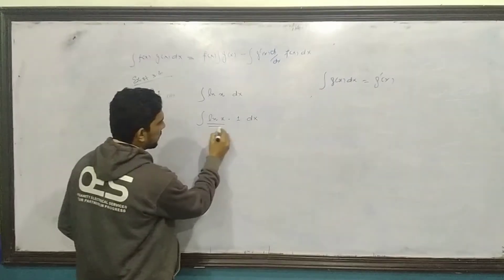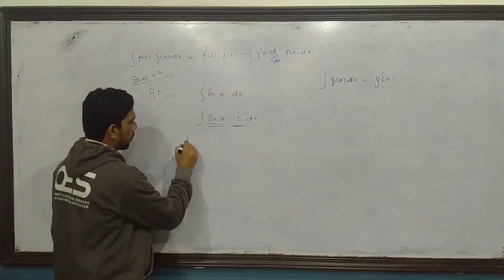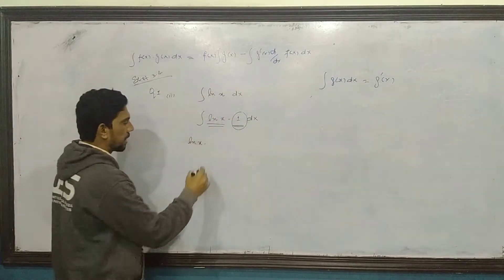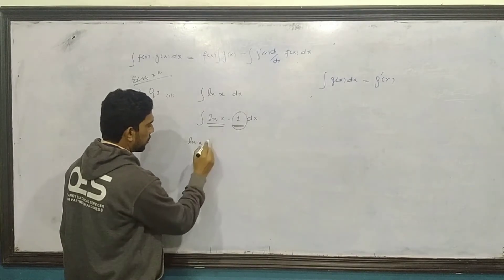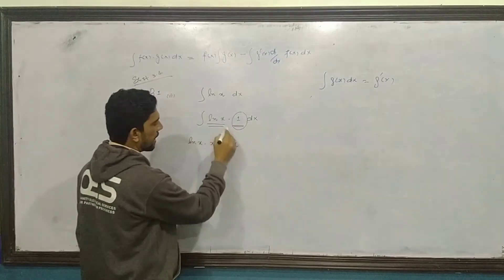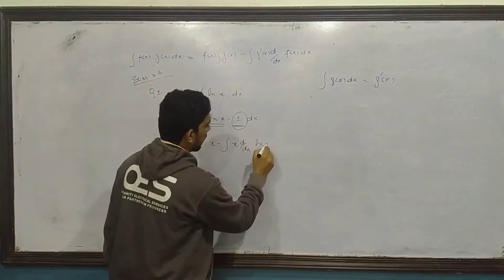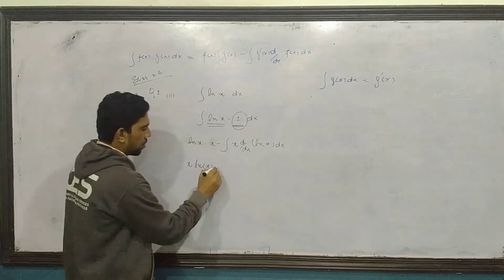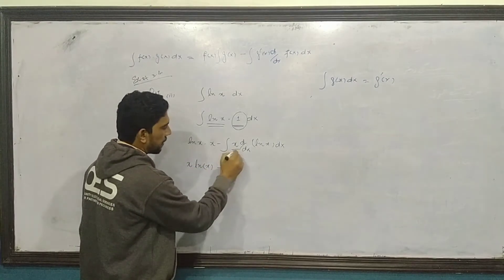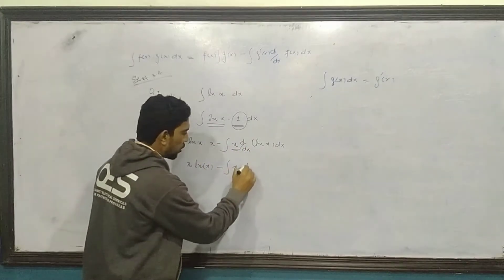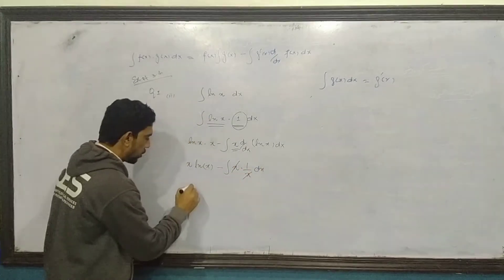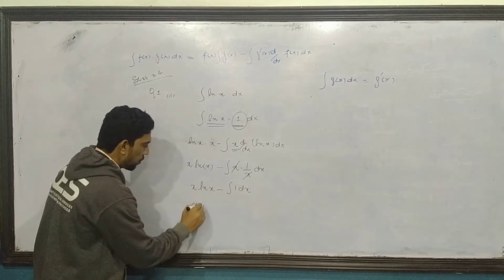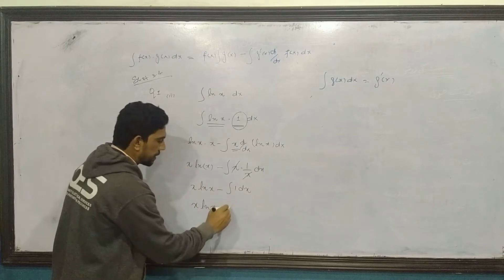Formula apply karte hain: first function log of x as it is, integration of second (which is 1) deta hai x. Minus integrated function x, times derivative of first function log of x, which is 1/x. Toh x log of x minus - integrated function x times 1/x - ek x se ek x cancel ho gaya. Bacha x log of x minus integration of 1 dx, jo hoga x.